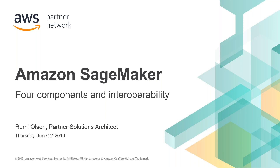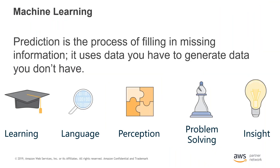Thank you everyone for joining the Deep Dive webinar today. I'm excited to talk about Amazon SageMaker, particularly the four main components and their interoperability. Before we get into SageMaker, machine learning is enabling us to solve some of the most difficult problems in computer science. Traditionally, software has been developed by coding instructions in a high-level programming language. ML is a complete breakthrough from this paradigm.